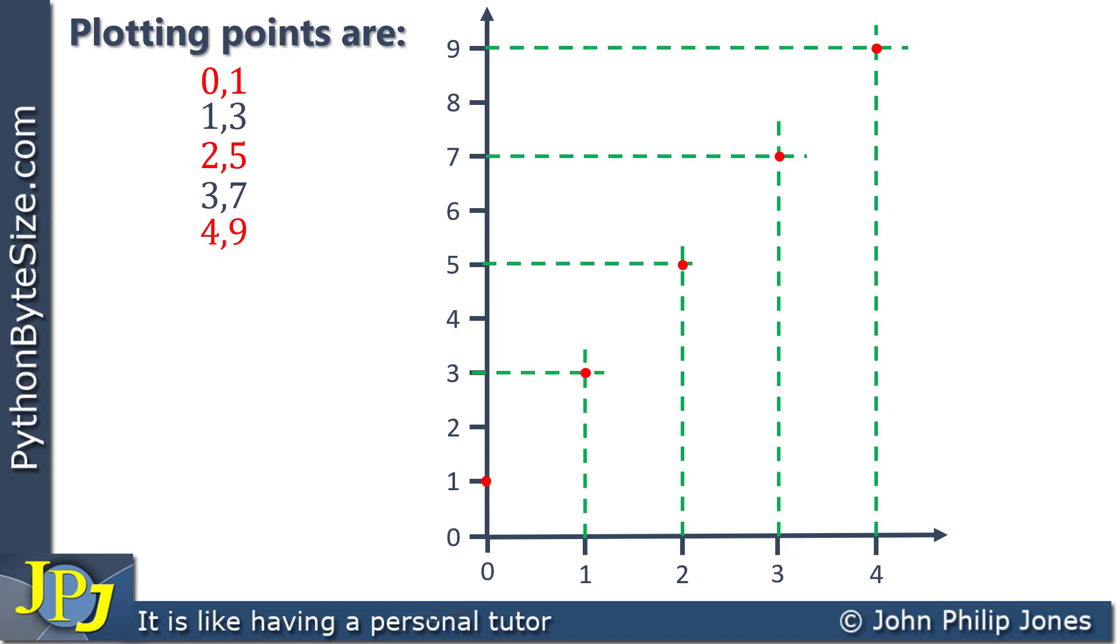Now bearing in mind, they won't always be a straight line when you plot graphs, but in this case they are. So I would look to see where the straight line would go, and you can see I've managed to draw it through all of the plotting points. Now I'm going to get rid of those plotting points on the dotted lines.